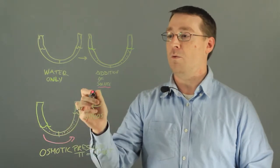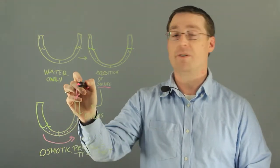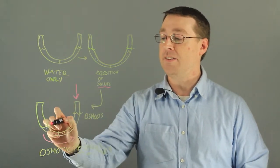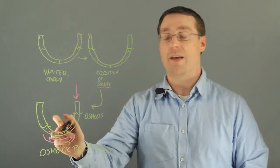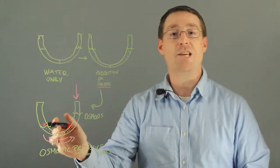And the osmotic pressure then is the amount of pressure that we put onto a liquid in order to prevent any net water from moving across the membrane and thereby we will keep the solution in equilibrium.